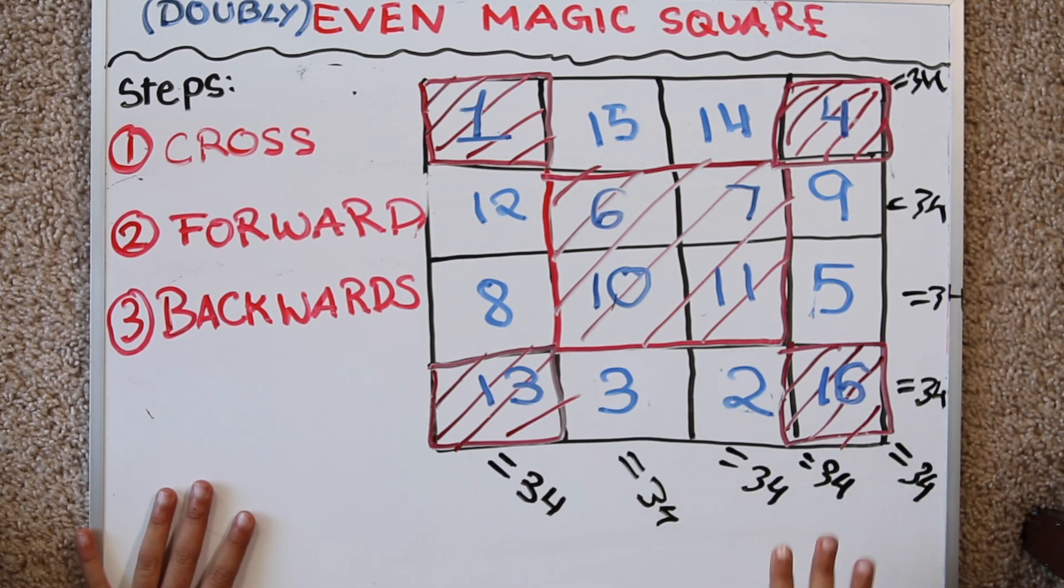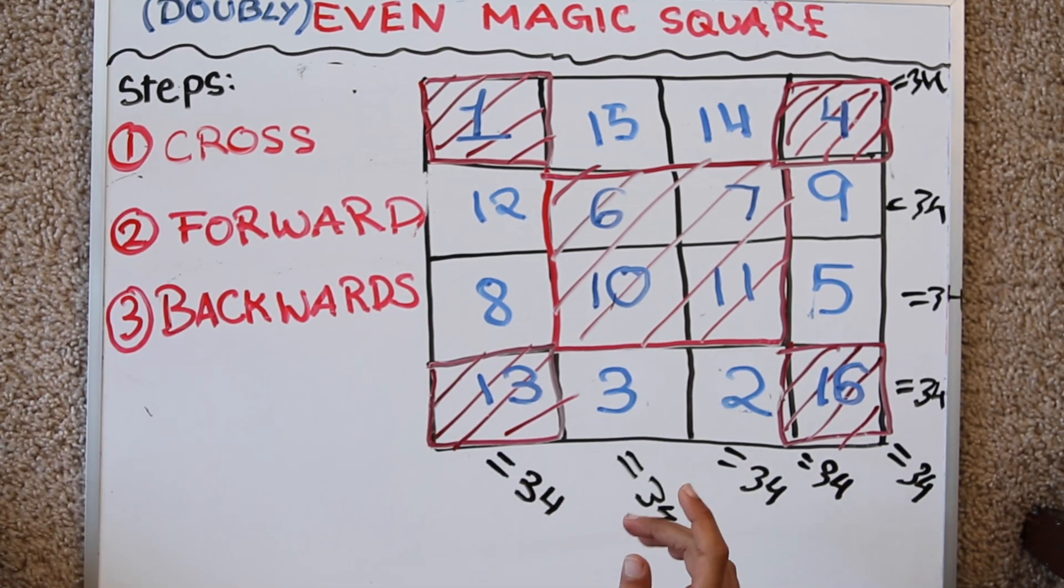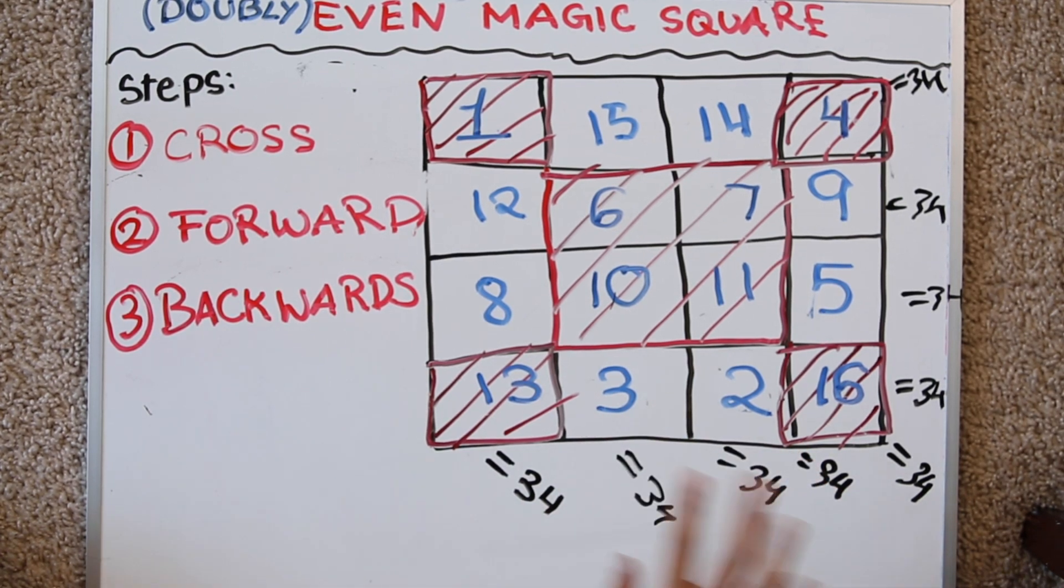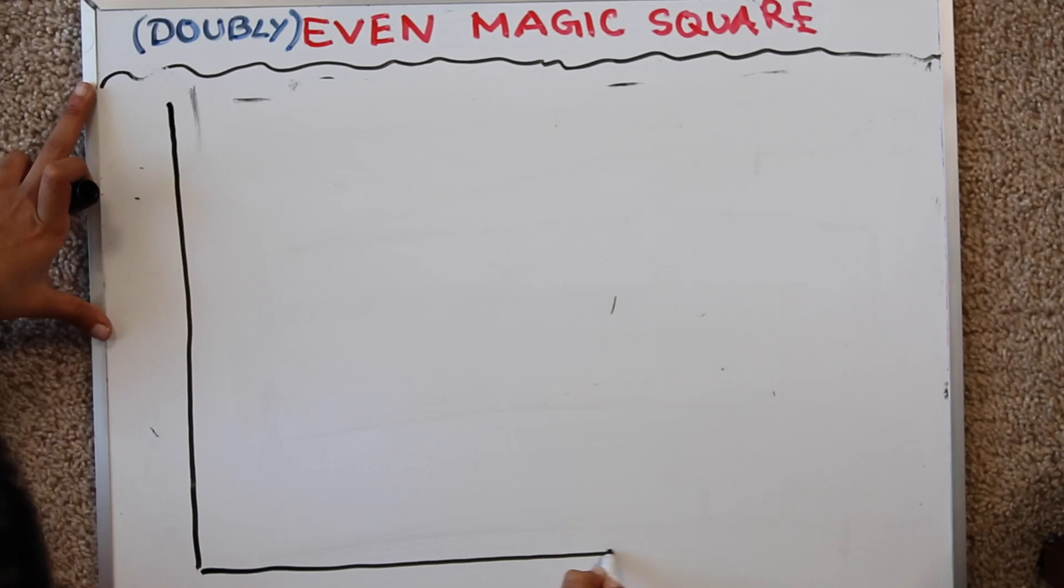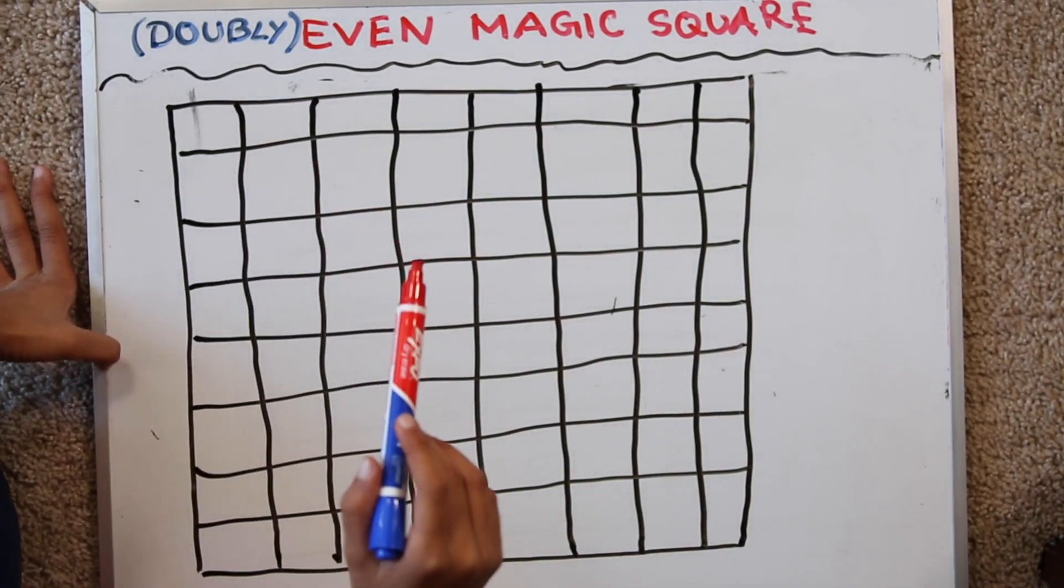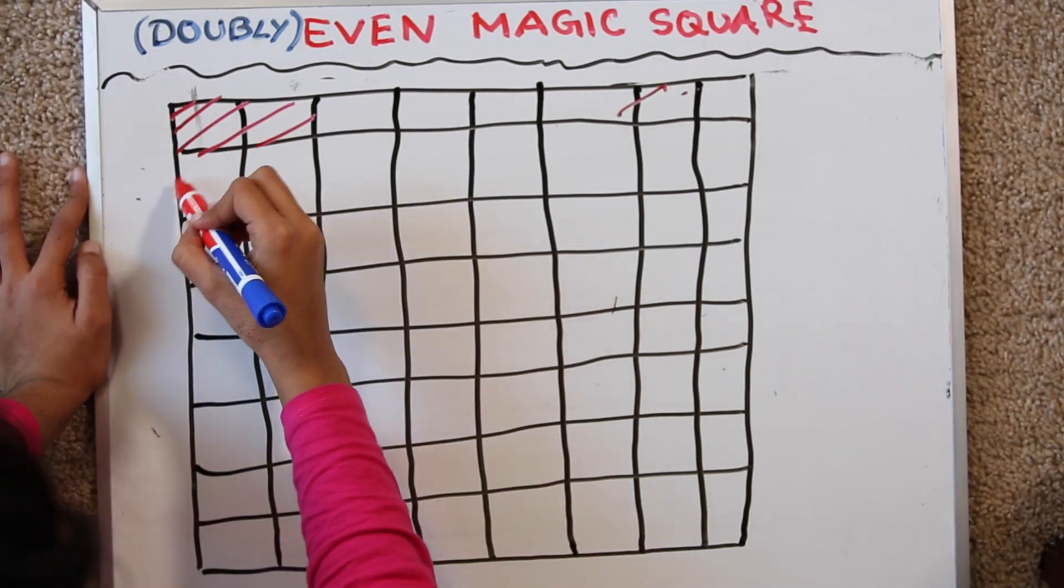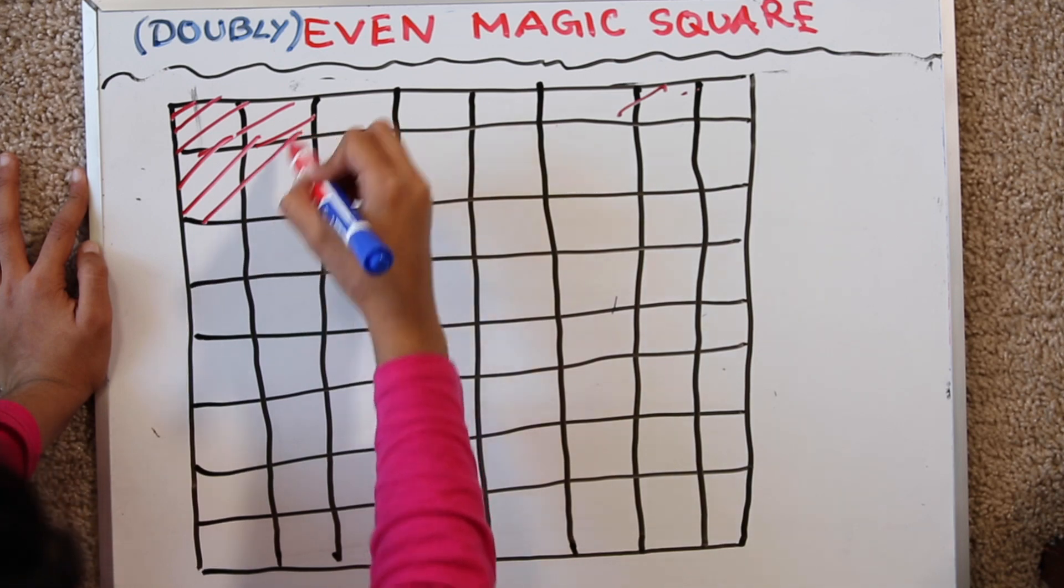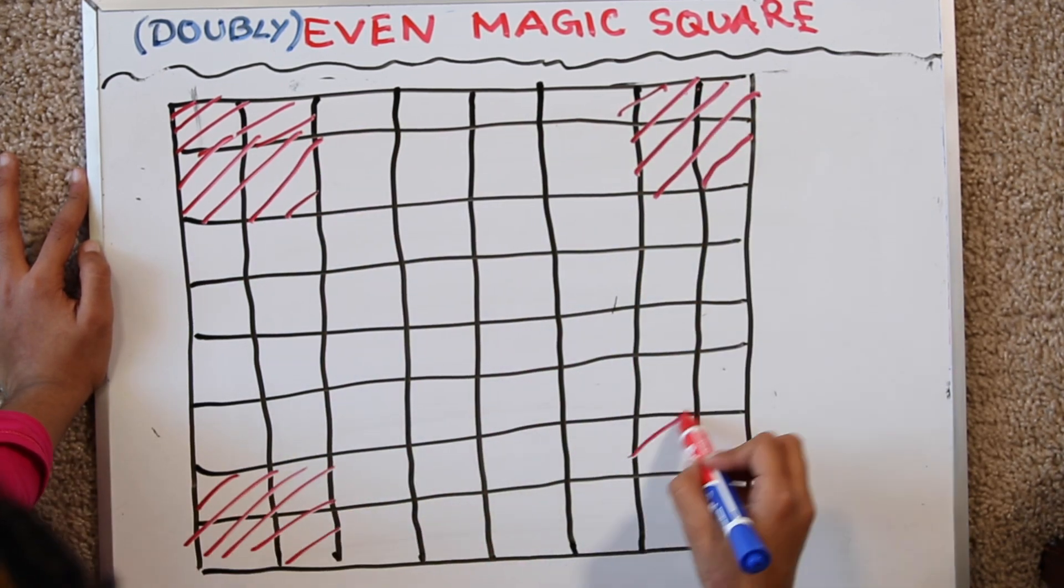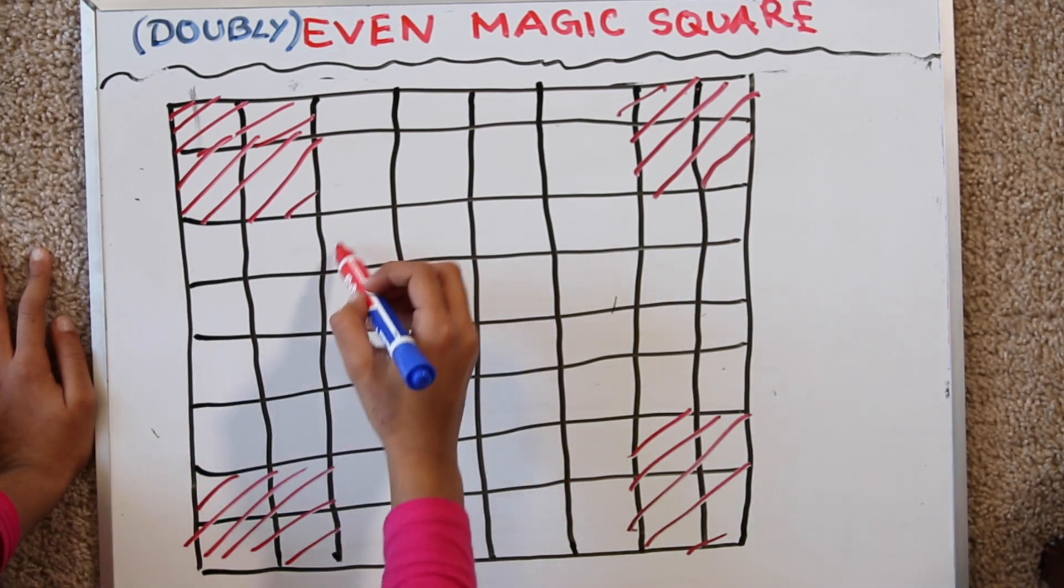Now let's try the same technique on the next doubly even magic square 8, which would be huge but we're not scared of numbers since we know these steps. Step 1: Cross. So since this is 8 the 1 fourth would be 2. So we're going to shade 2 by 2 corners in. And the center which would be half which is 4 by 4.